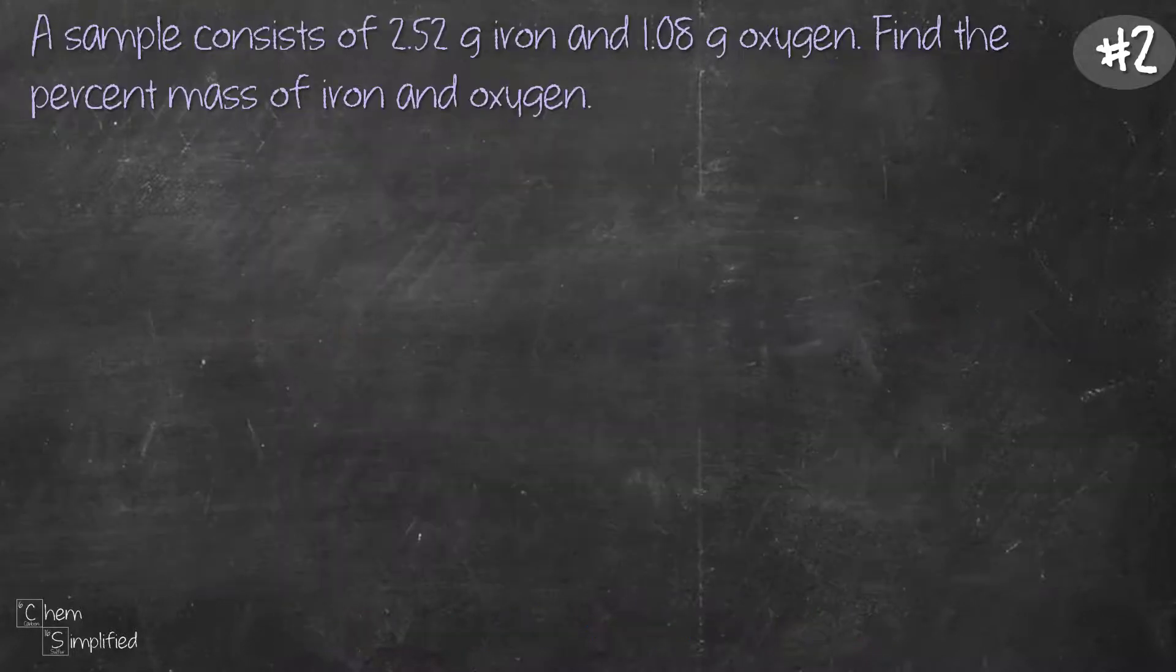Now we move on to another example which is percent mass by experimental values. Notice how this question is slightly different from the first one. Over here we are actually given the mass of iron which is 2.52 grams and the mass of oxygen which is 1.08 grams and then we're asked to find the percent mass of iron and oxygen. So our sample clearly only contains iron and oxygen.